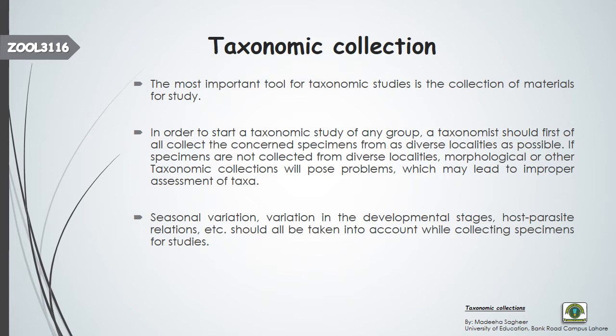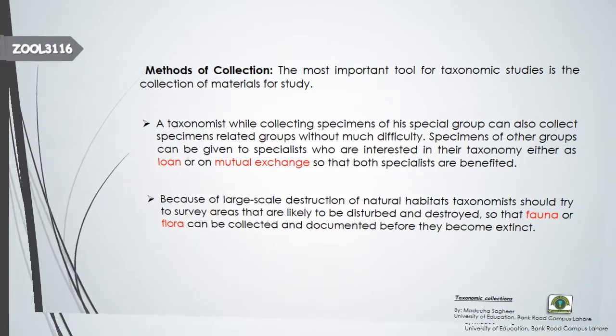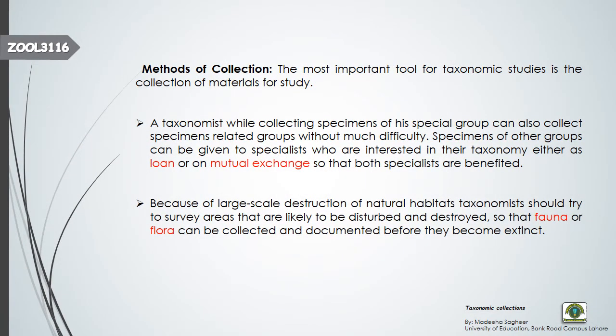Therefore, a taxonomist should collect specimens from as many diverse localities as possible. Seasonal variation, variation in developmental stages, and host-parasite relationships should all be taken into account while collecting specimens. As we studied in previous lectures about variations, different variations should be kept in mind during collection.